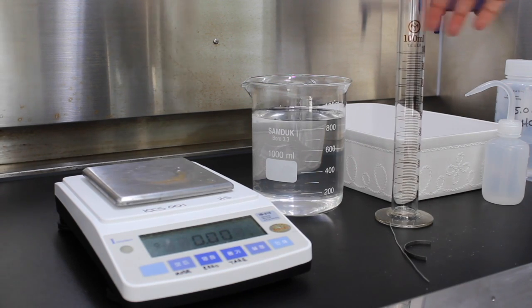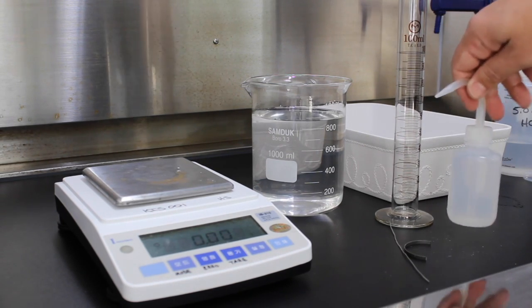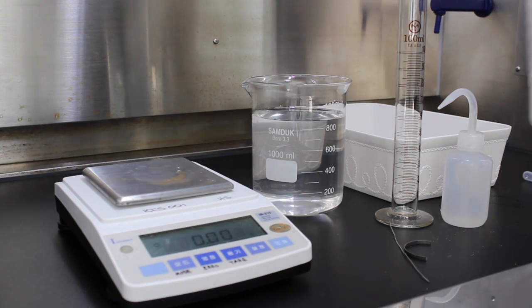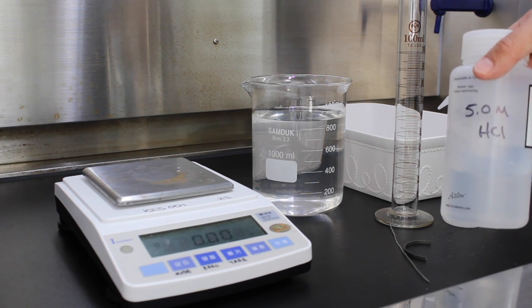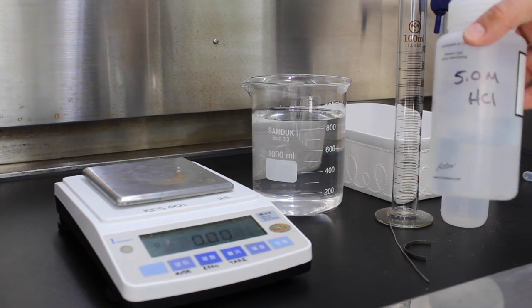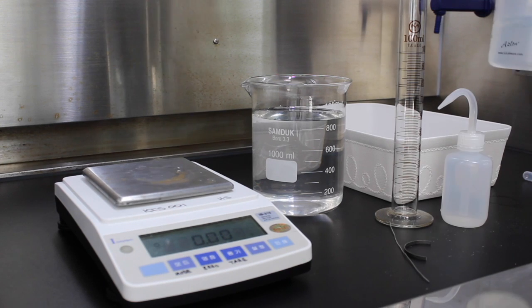We have a 100 milliliter graduated cylinder. We have a wash bottle full of water. We have some hydrochloric acid here. This is fairly concentrated. This is five molar. You'll be using six.